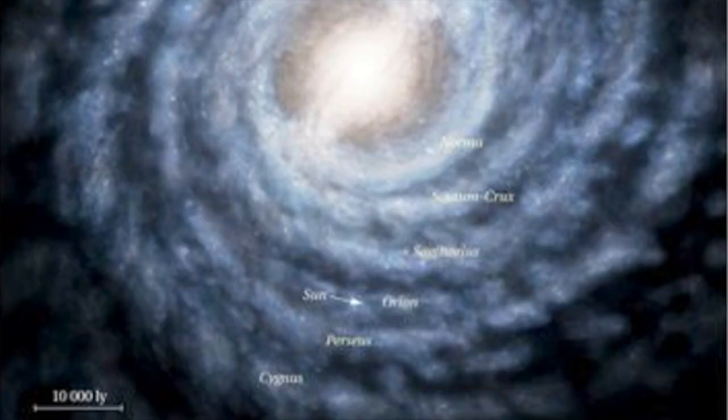Looking again at the representation of the whole Milky Way, that is about 30 kiloparsecs, 30,000 parsecs across.